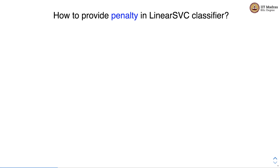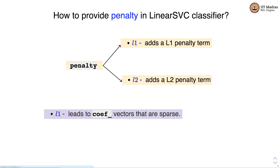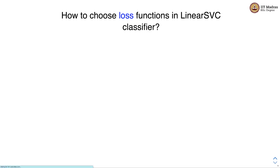To provide penalty in LinearSVC, we can use L1 penalty or L2 penalty. L1 leads to coefficient vectors being sparse. By default, LinearSVC uses L2 penalty.